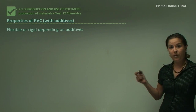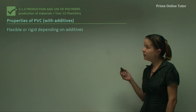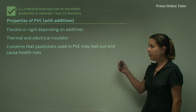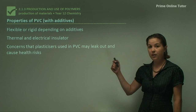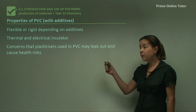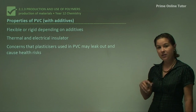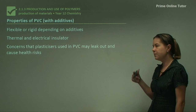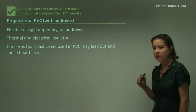Looking at the properties of PVC with these additives: they can be made flexible or rigid depending on the additives, and they can be thermal and electrical insulators. The problem is there are concerns that plasticisers used in PVC may leak out and cause health risks, such as immunosuppression, reproductive problems, and developmental problems. None of this has been 100% proven, but we are a bit wary that it could be a slight danger.